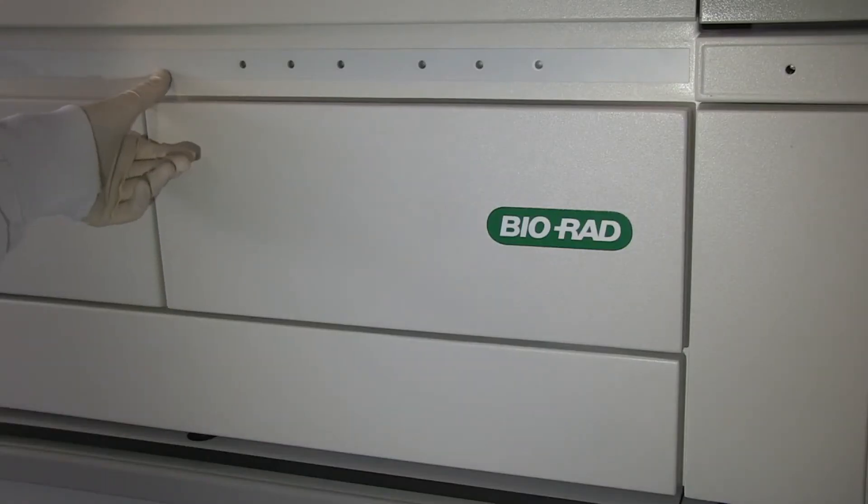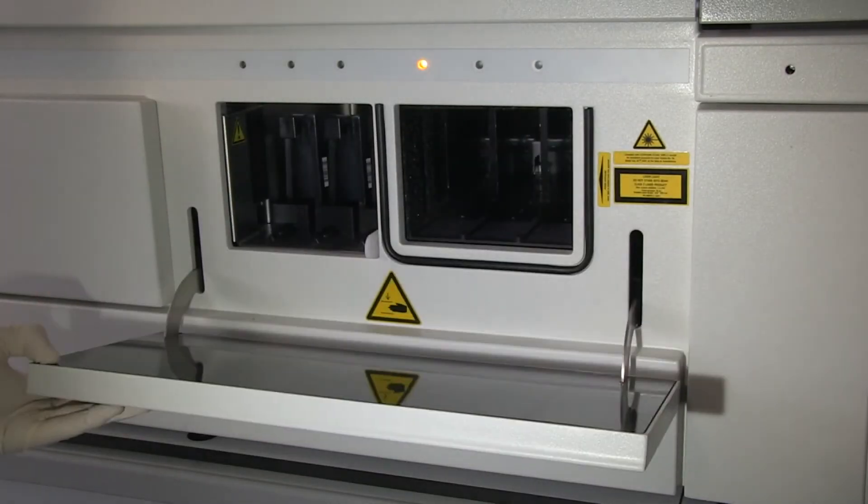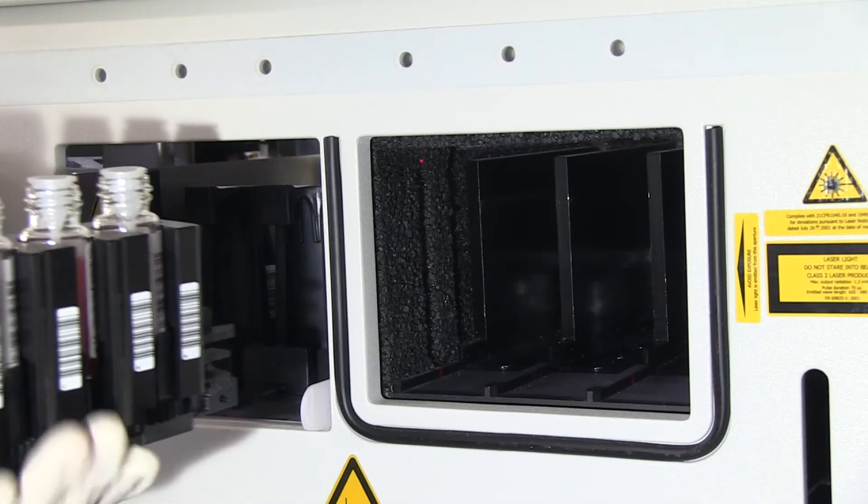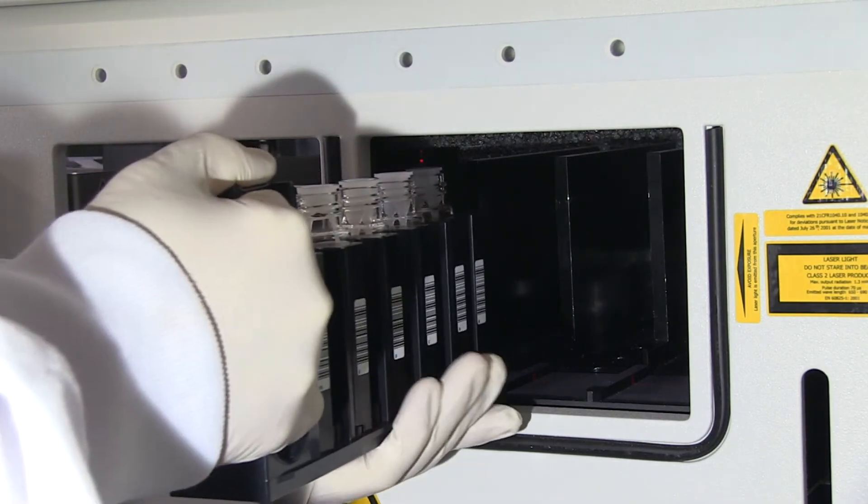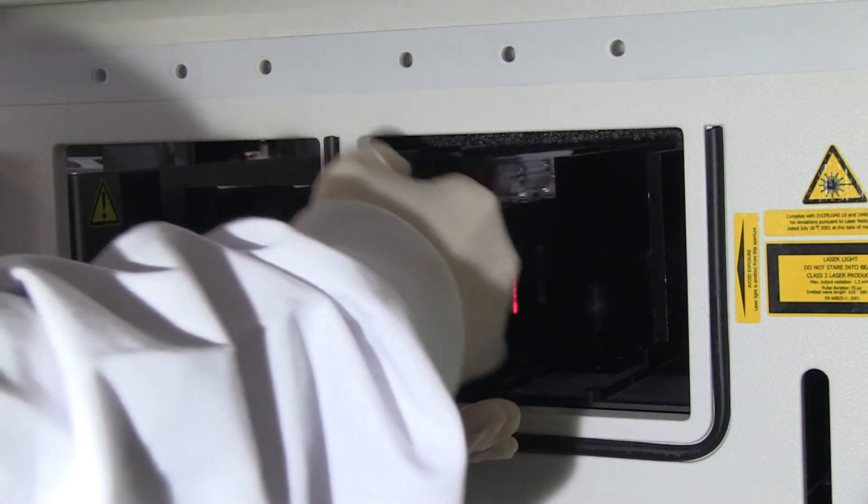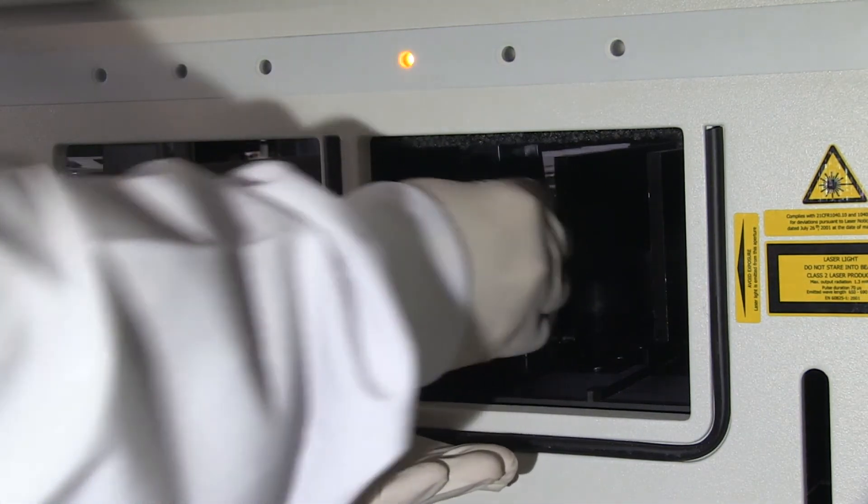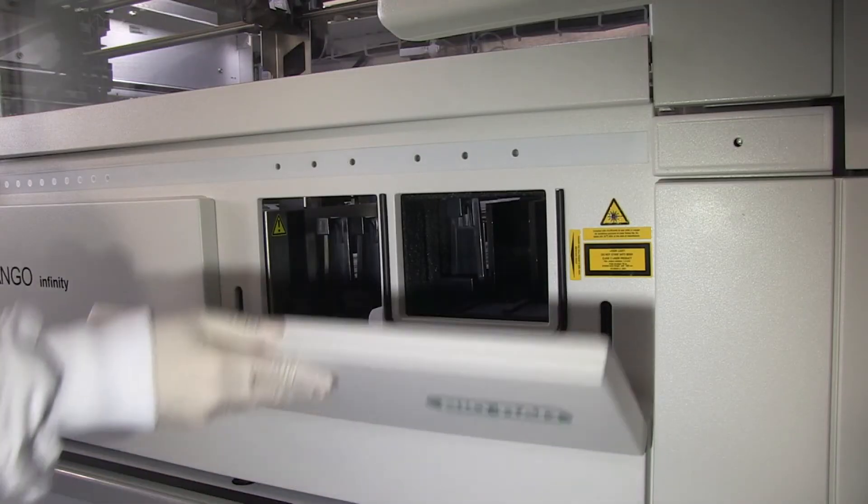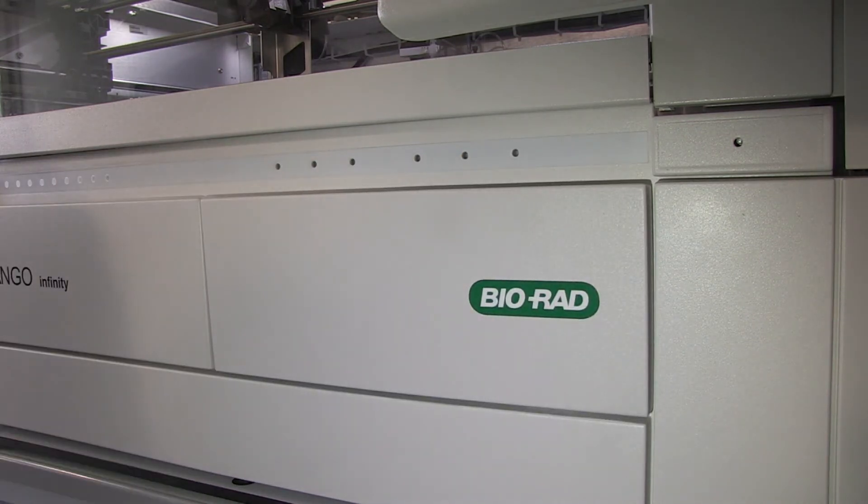To load the reagent rack, open the door of the reagent bay. A slowly flashing LED in front of the reagent bay indicates the track that is ready to accept the next sample rack. Guide the sample rack by hand and slide it smoothly on the track until it clicks into place. After all sample racks are loaded, close the door of the sample bay.